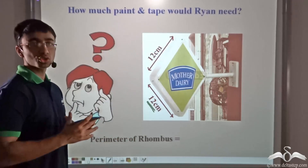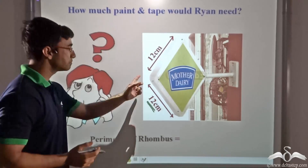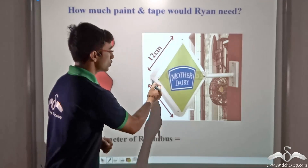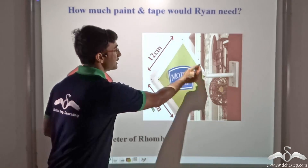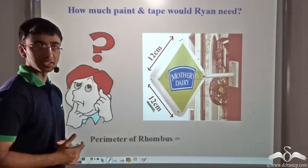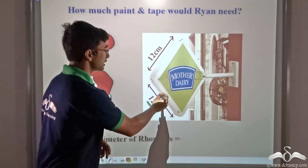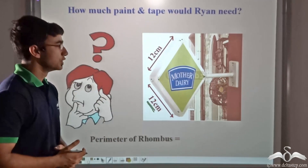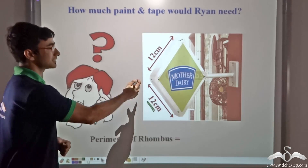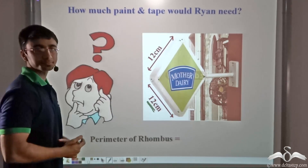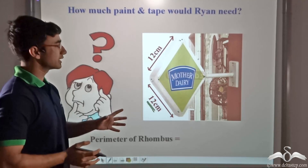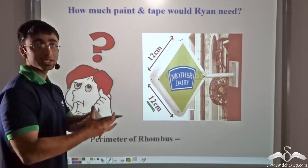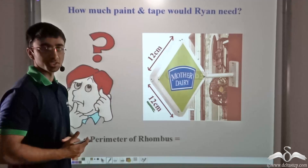Further, Ryan also had to tape the sides of the particular signs. So in order to know how much tape he needed he had to know the perimeter, and in order to know how much paint he needed he had to know the area. So it has been given to us that this is a rhombus, so let us see how we can calculate the perimeter and the area of the rhombus.